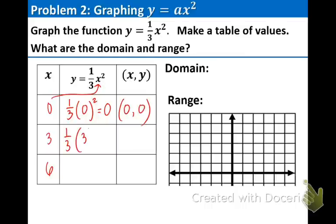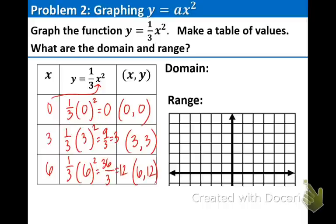So 1 third times 0 squared equals 0, giving us the coordinate 0, 0. Next, plug in the 3: 3 squared is 9, 9 over 3 equals 3, so the next coordinate is 3, 3. Last one, 1 third times 6 squared: 1 third times 36 equals 12, giving us 6 comma 12.